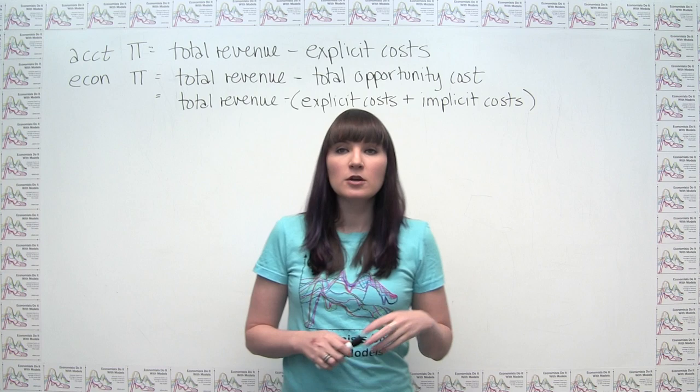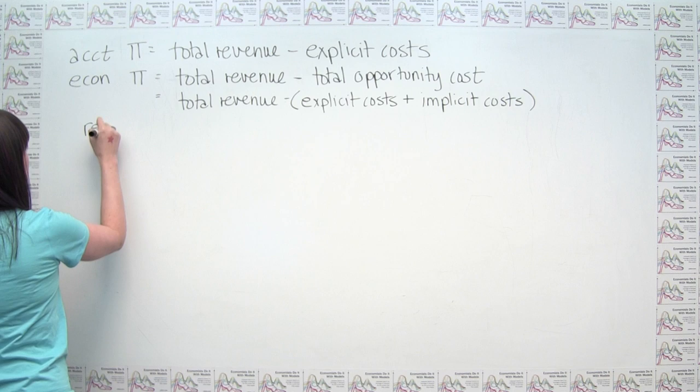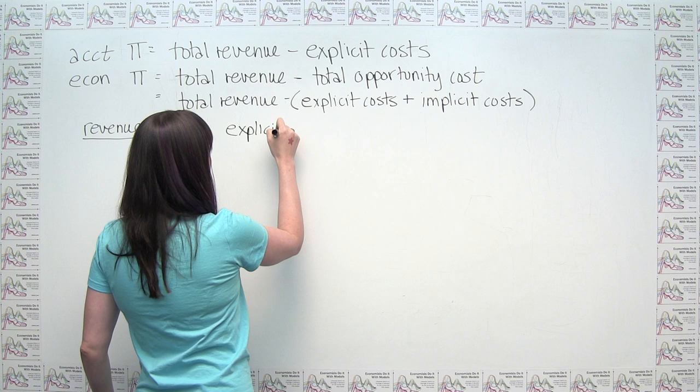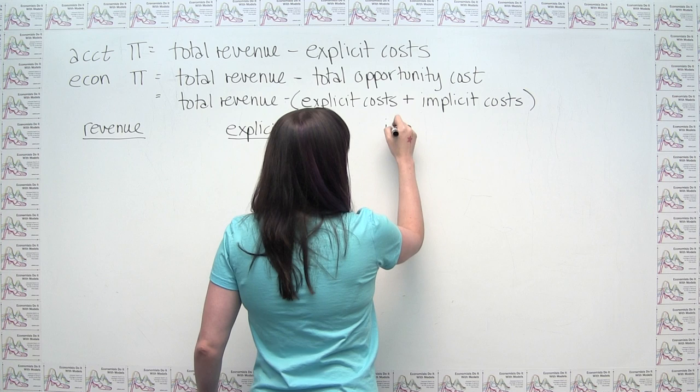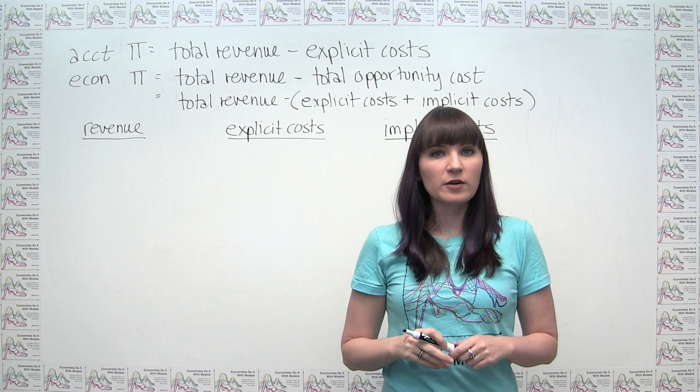What we'd want to do here is come up with three headings: revenue — the money we're bringing in — explicit costs, where we'll keep a running total, and implicit costs. We can go through the problem and think about whether each cost is explicit or implicit.